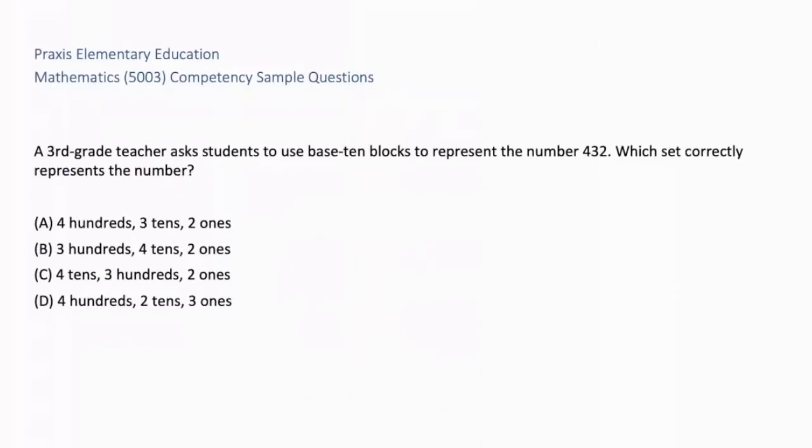A third grade teacher asks students to use base 10 blocks to represent the number 432. Which set correctly represents the number? A, 4 hundreds, 3 tens, 2 ones. B, 3 hundreds, 4 tens, 2 ones. C, 4 tens, 3 hundreds, 2 ones. Or D, 4 hundreds, 2 tens, 3 ones. Let's walk through the process of elimination.